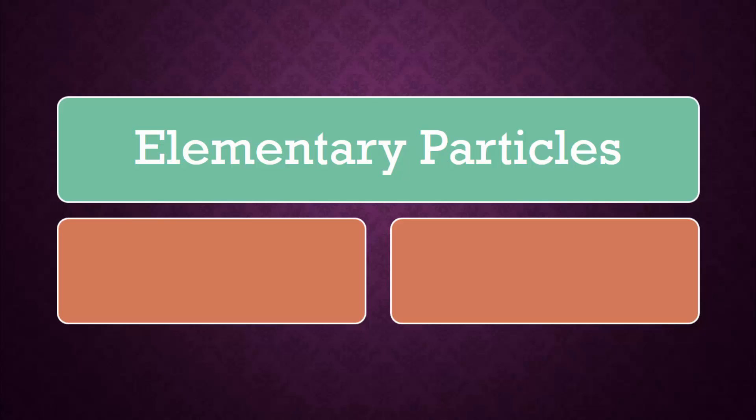These particles are not composed of other smaller particles. These are truly the building blocks of the universe. There are two types of elementary particles, known as quarks and leptons.